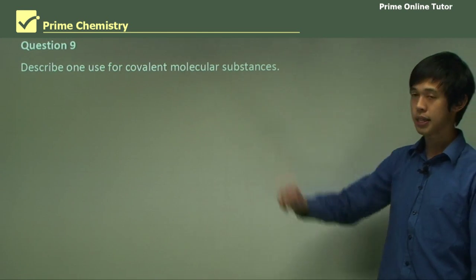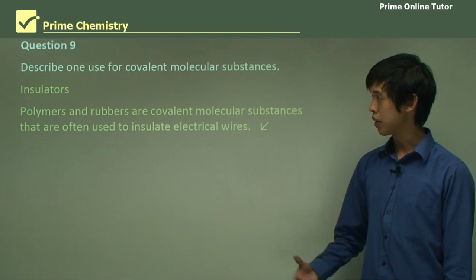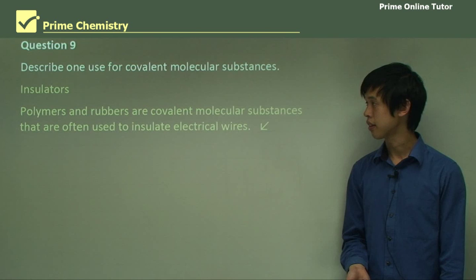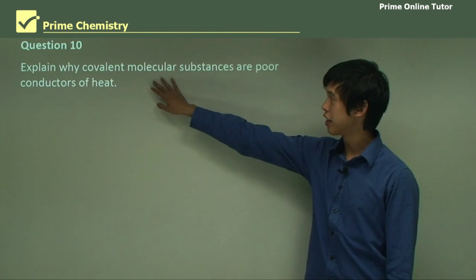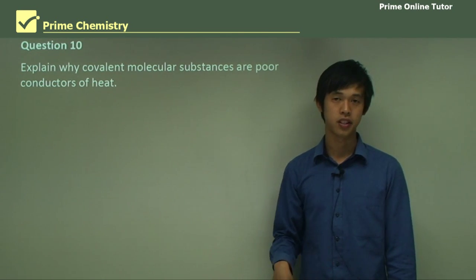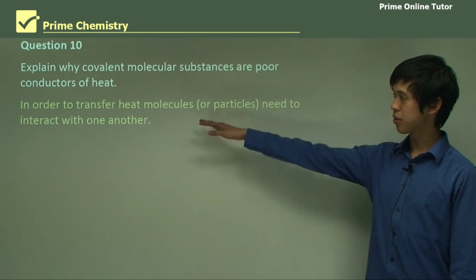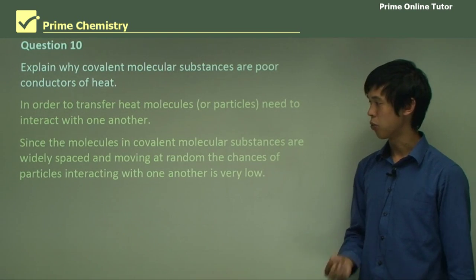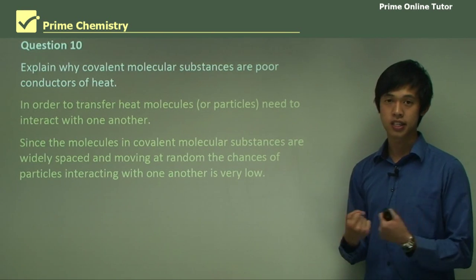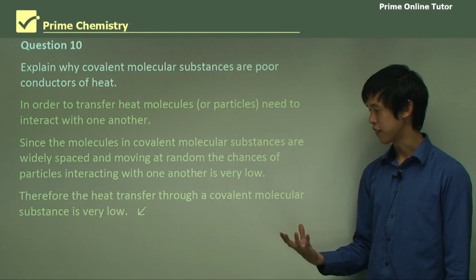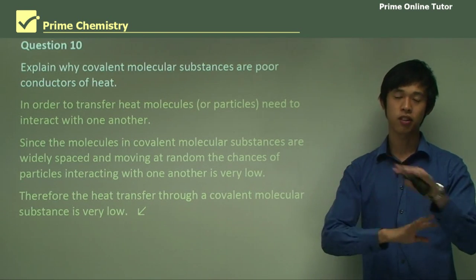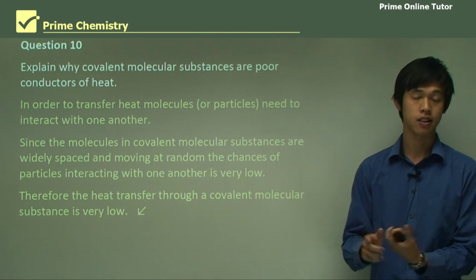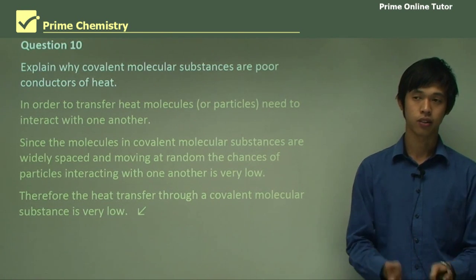Question: Describe one use for covalent molecular substances. They can be used as insulators — polymers and rubbers are covalent molecular substances often used to insulate electrical wires. Question: Explain why covalent molecular substances are poor conductors of heat. In order to transfer heat, molecules need to interact with one another. Since molecules in a covalent molecular substance are widely spaced and moving at random, the chances of particles interacting is very low. Therefore heat transfer is also very low — it takes much longer to spread heat compared to ionic, covalent network, or metallic substances.